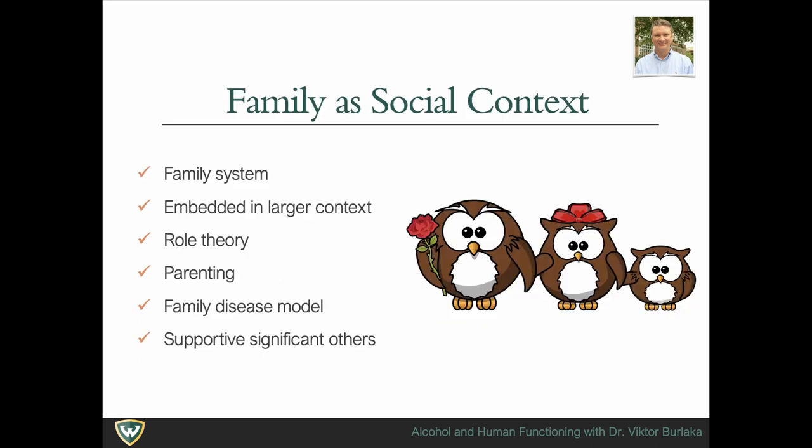The family is often viewed in systems dynamic terms, involving interactions, relationships, and roles across the family. Both individuals affect the system and the system affects individuals. Children in families learn desired behaviors through reinforcement and observation. Families are embedded in larger social contexts such as extended family and friends, spiritual centers, and healthcare and child welfare systems. Substance use can be both a source of stress and a coping mechanism for family members.